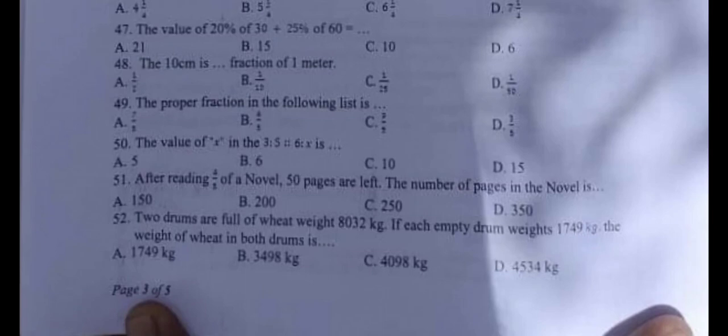Question number 52: Two drums are full of wheat weight 8032 kg. If each empty drum weighs 1749 kg, the weight of wheat in both drums is, and the correct answer is D, 4534.